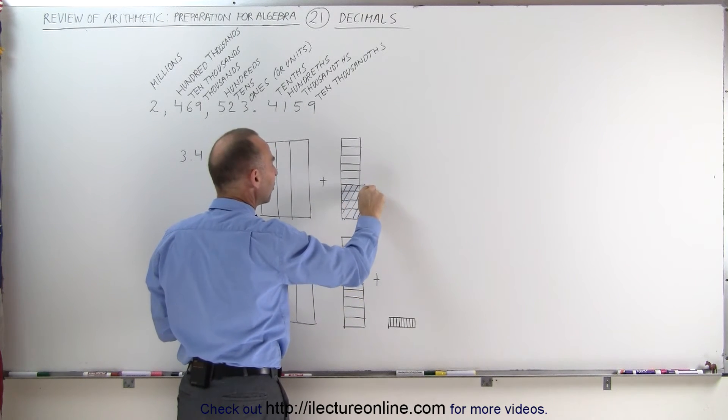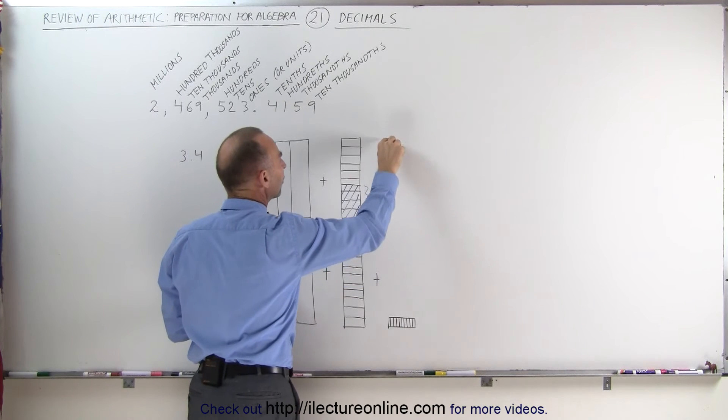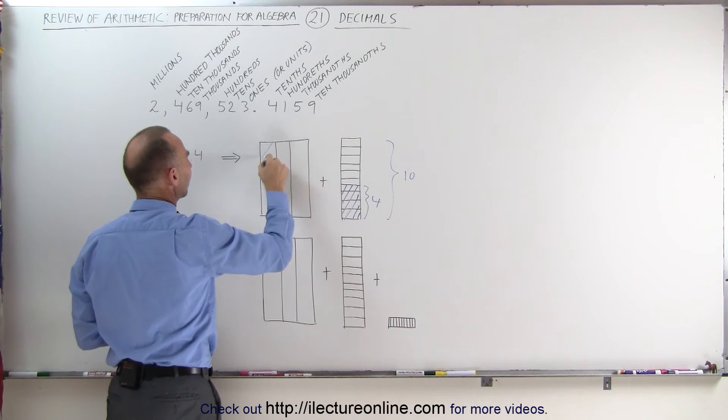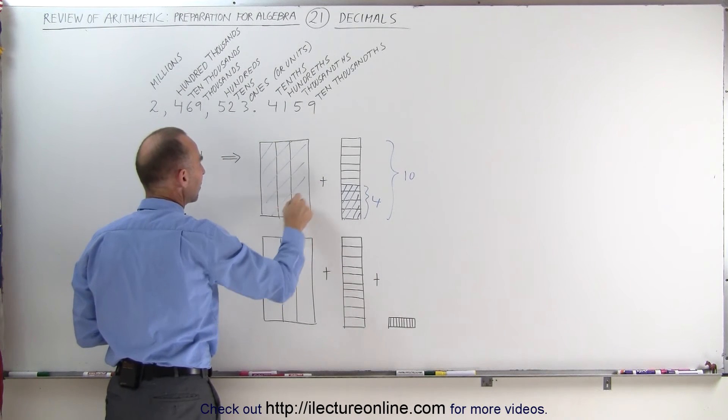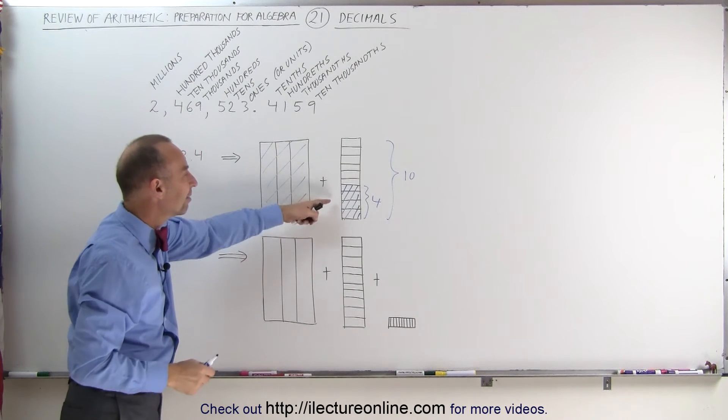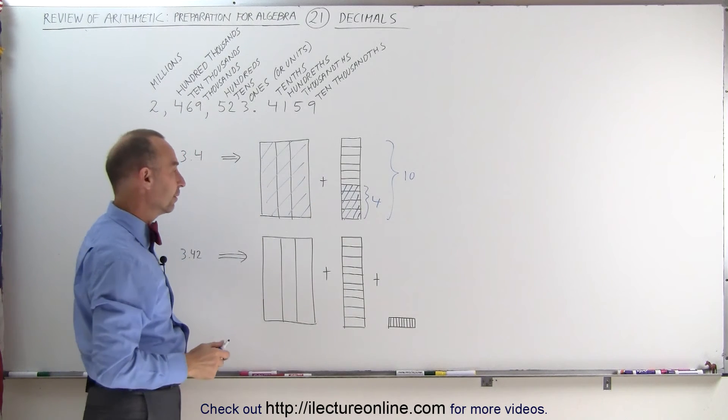This represents 4 out of a total of 10. So this is 4 tenths. Of course, you have the complete units here, you have 3 complete units, and you have 4 tenths of a unit, a little bit less than one half of a unit.